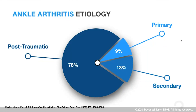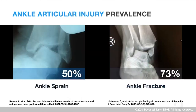From an ankle arthritis standpoint, we tend to think about this as we might the knee, but in fact ankle arthritis is different. The knee is highly susceptible to primary osteoarthritis, but in the ankle that only accounts for about nine percent. Most ankle arthritis is post-traumatic — just shy of 80 percent. About 50 percent of ankle sprains will result in a chondral injury.